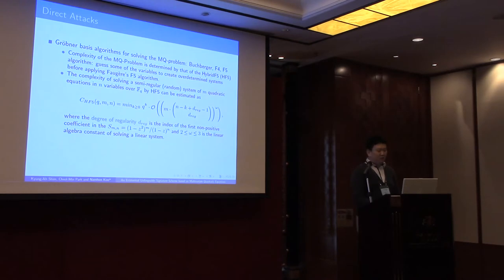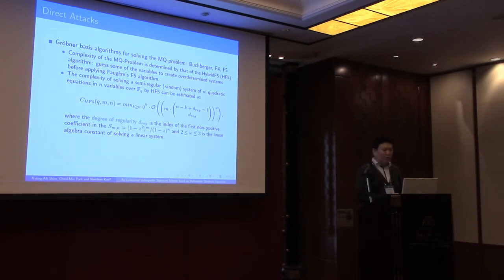For direct attacks, we consider Gröbner-based algorithms like F4 and F5 for solving the MQ problem. The complexity of the MQ problem is determined by that of the hybrid F5 algorithm, which fixes some of the variables to create over-determined system before applying F5 algorithm. The complexity of the hybrid F5 algorithm can be estimated by this formula, where degree of regularity is the index of the first positive coefficient in this polynomial, this expression, and omega is the linear algebra constant.